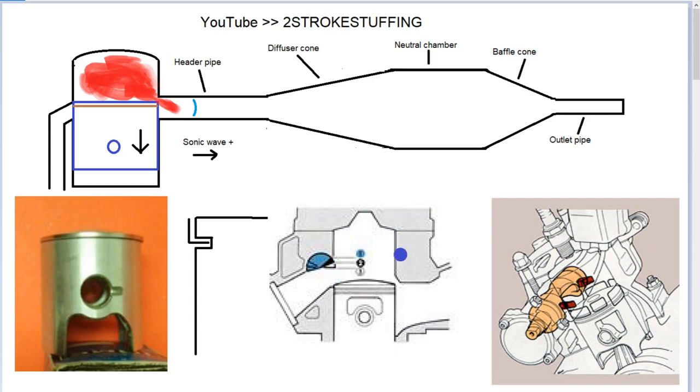But if we're completely changing the trapped compression, what we're also doing is changing the exhaust timing edge. So essentially the edge will be taken from when the top of the piston reaches the top of the port, not the ring.